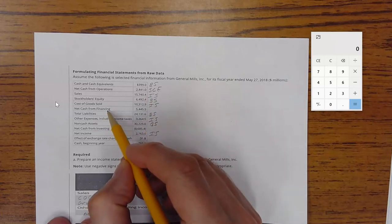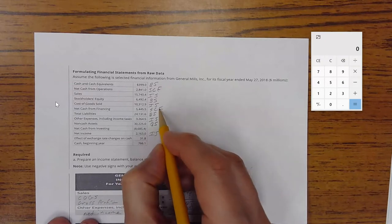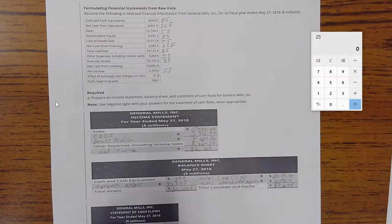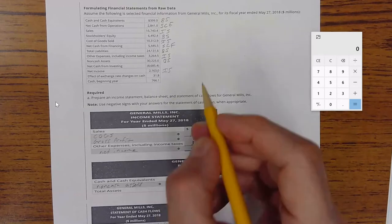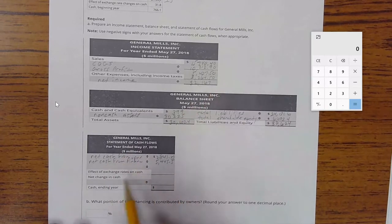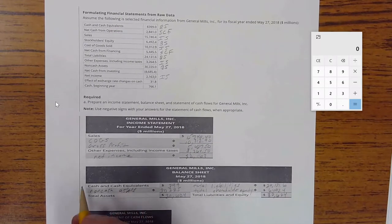Financing is usually the second item, and that's the order that we have it. Net cash from financing is 5,445.5. So let's write SCF here for statement of cash flows, and then net cash from financing activities. That was 5,445.5. And then let's go back up here and find investing. Net cash from investing is a negative figure.